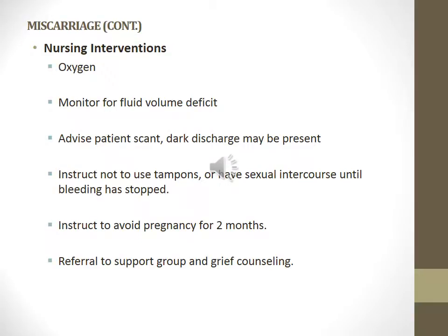Nursing interventions post-miscarriage: place the patient on oxygen, monitor for fluid volume deficit, advise the patient about scant dark discharge that may be present. Instruct that no tampons or sexual intercourse should occur until the bleeding has stopped. Instruct them to avoid pregnancy for 2 months and refer them for support or grief counseling.